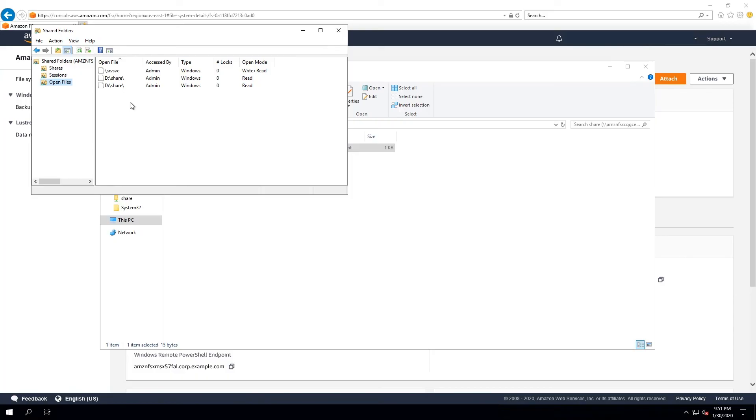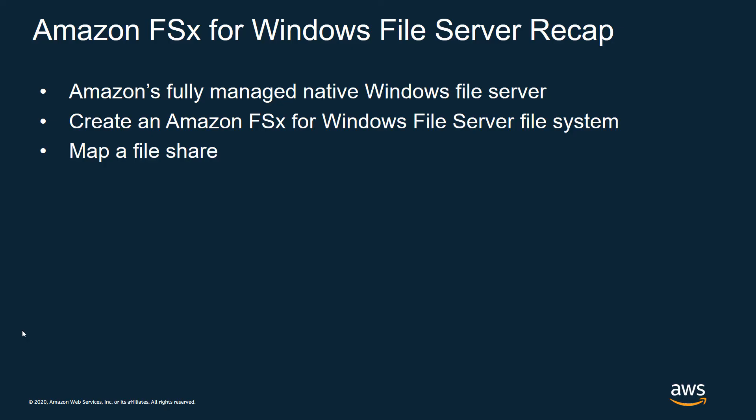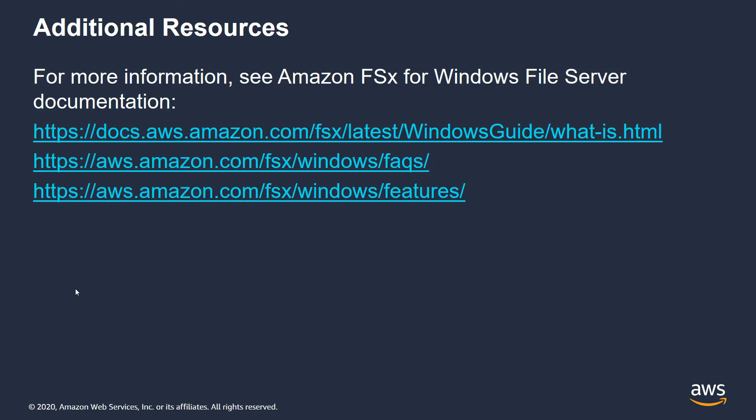So in recap, in this session you learned what Amazon FSx for Windows File Server is — Amazon's fully managed native Windows File Server service. You also learned how to create an Amazon FSx for Windows File Server file system and how to map a drive to it. Here are some additional resources: a guide on Amazon FSx for Windows File Server, and a great FAQ with frequently asked questions. Thank you for your time and have a great day.